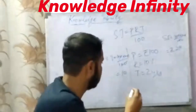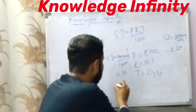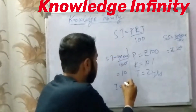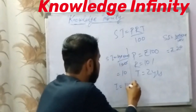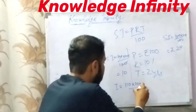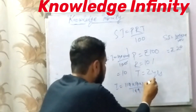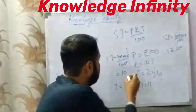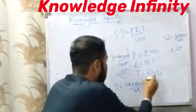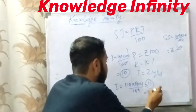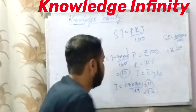The interest for the second year will be: 110 × 10 × 1 ÷ 100, which comes to rupees 11. So the total compound interest will be rupees 10 plus rupees 11, that means rupees 21.